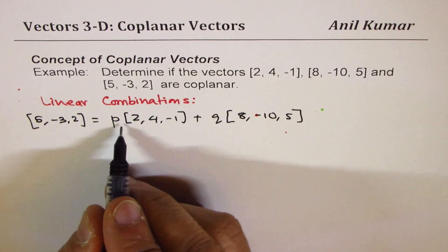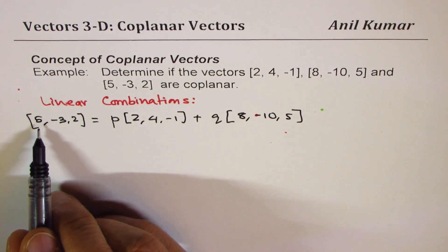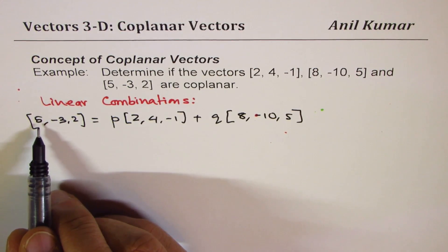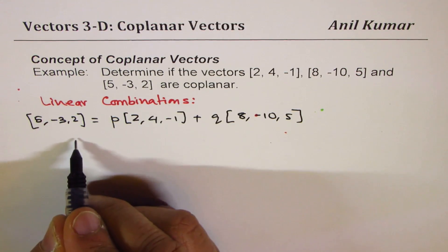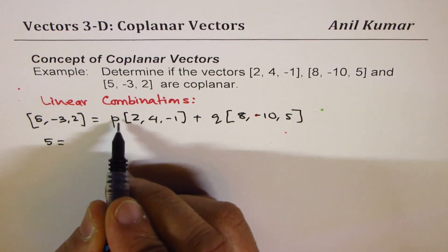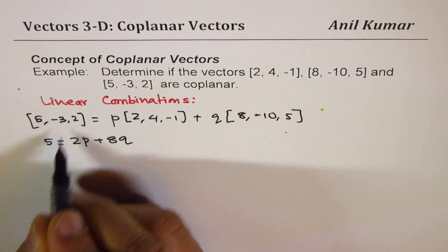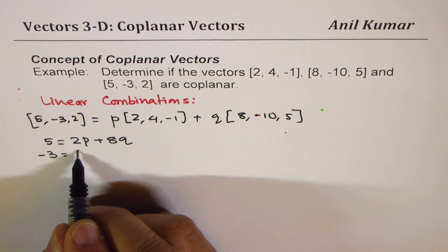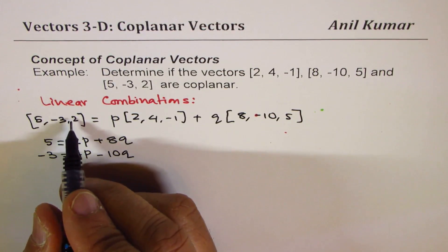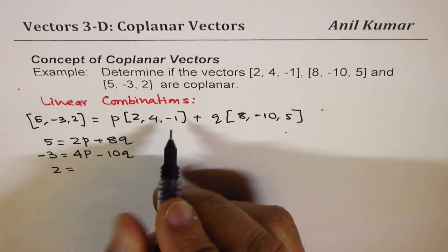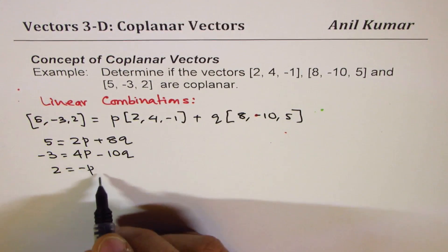If you expand, you could now relate the direction numbers A, B and C for each. We get three equations from here. One is 5 equals to 2P plus 8Q. -3 equals to 4P minus 10Q. And 2 equals to -P and here we get 5Q.